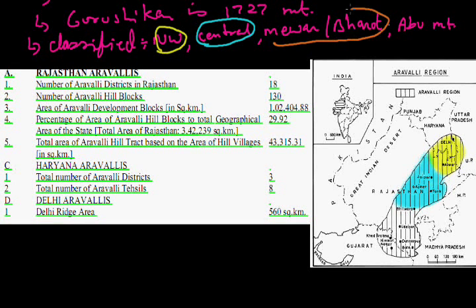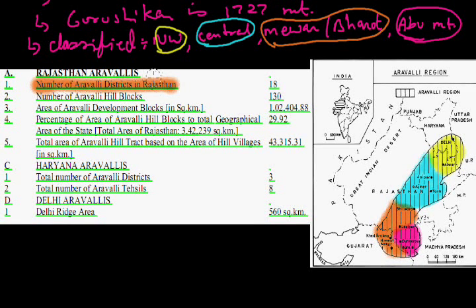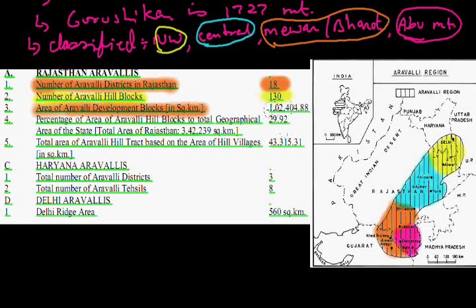The third sub-division is the Mewar, also known as Bharut, and the fourth is the Abu Mountain region, where we find the highest peak of Rajasthan — Gurushikhar. The central part includes the Jaipur, Tonk, and Ajmer region, and the maximum part of Bhilwara is also covered by this region. The number of Aravali hill blocks is 130, and the total area of Aravali developed blocks is more than 12,404 square kilometers.